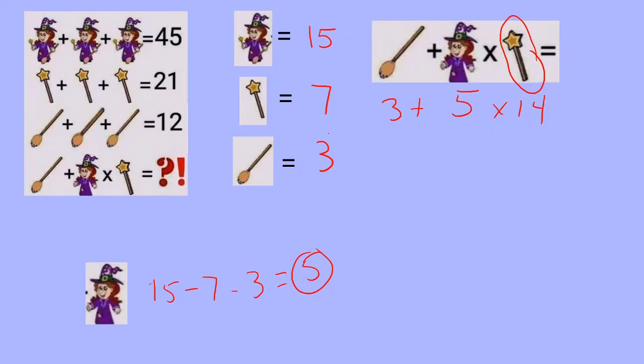All right, now, one final step in here. We've got to do order of operations. Multiplication comes before addition. So we're going to do this first. Three plus 70. And then our final answer here is going to be 70.